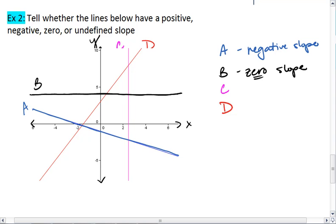Line C goes straight up and down, giving it an undefined slope.